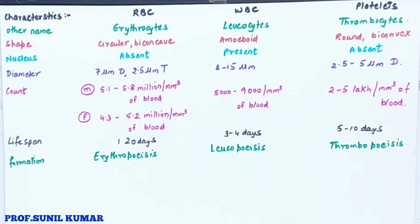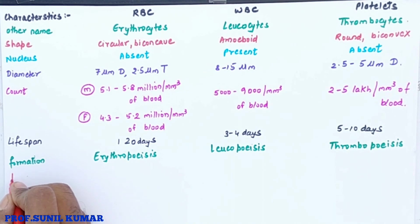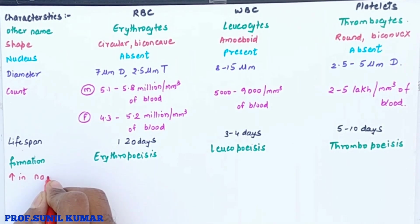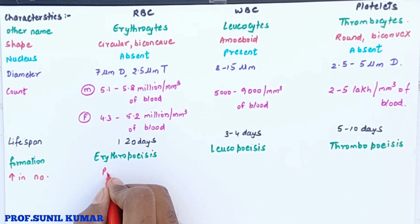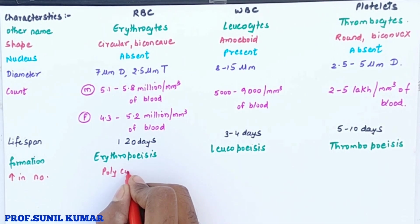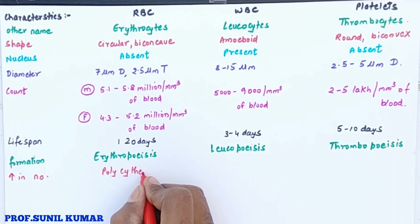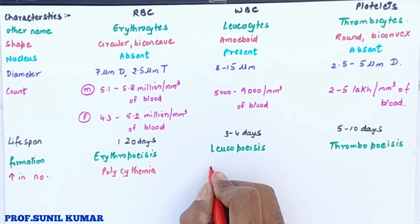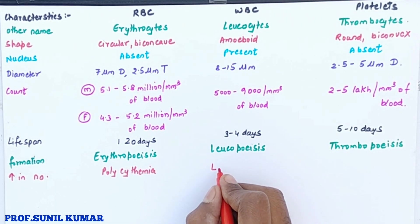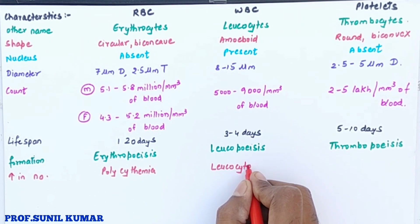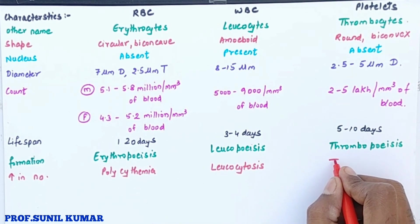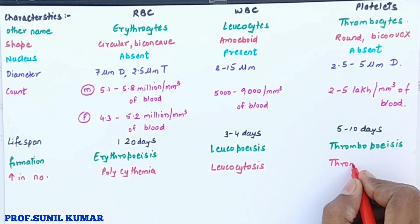If there is a higher number of RBCs than the normal range, it is called polycythemia. A higher number of WBCs than the normal range is called leukocytosis. A higher number of platelets than the normal range is called thrombocytosis.